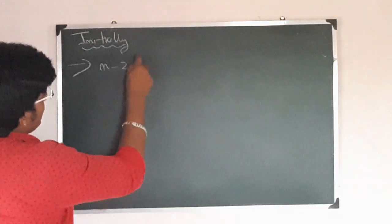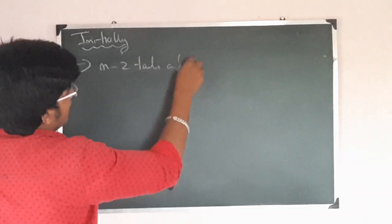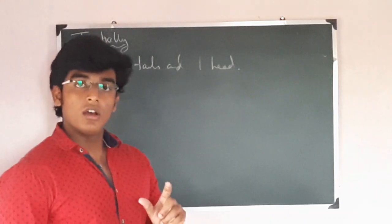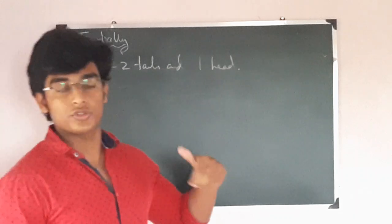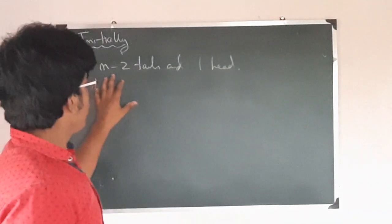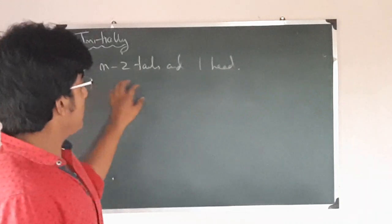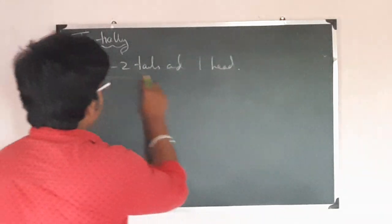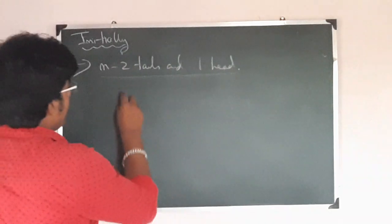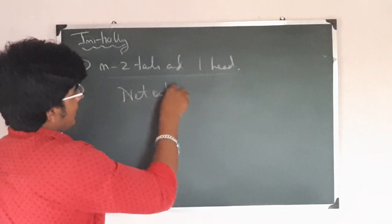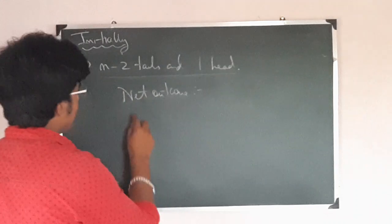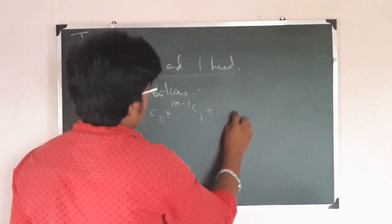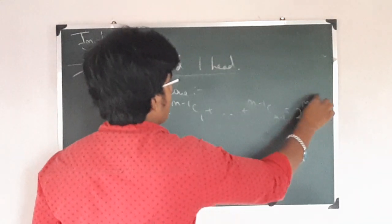In the next case, we can get N minus 2 tails and one head. N minus 2 tails will give you N minus 2 points and one head will give you 2 points, so N minus 2 plus 2 gives you N points. The total number of outcomes here is N minus 2 plus 1, that is N minus 1. The total outcomes sum gives (N-1)C0 + (N-1)C1 + ... + (N-1)C(N-1), which equals 2^(N-1).